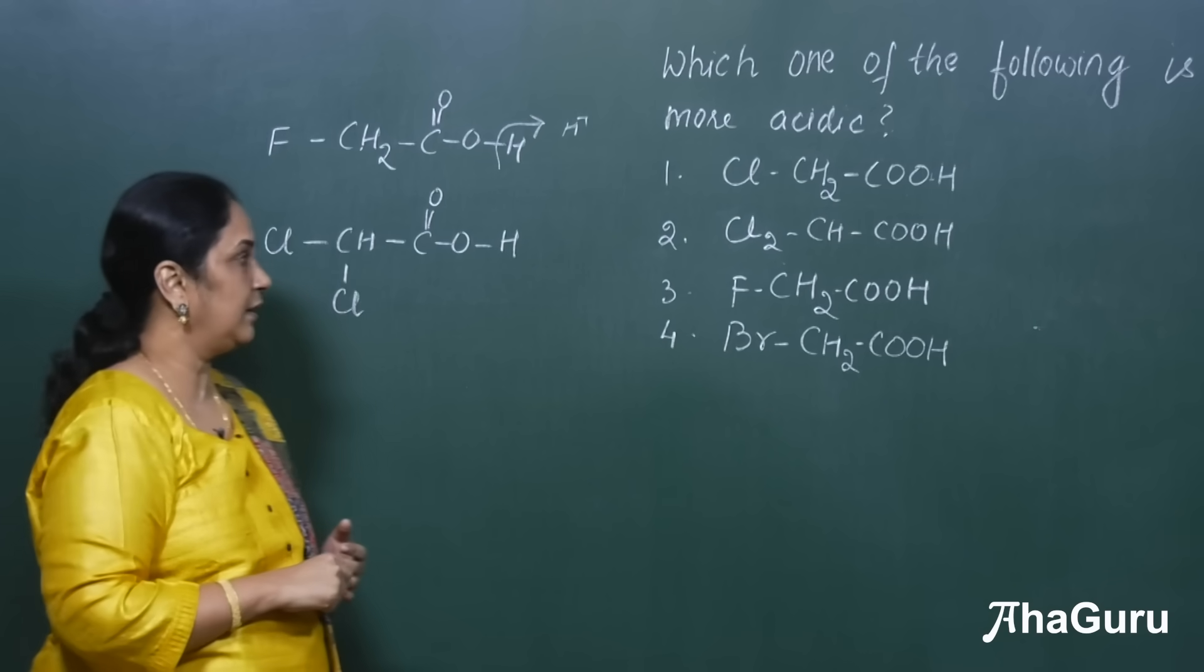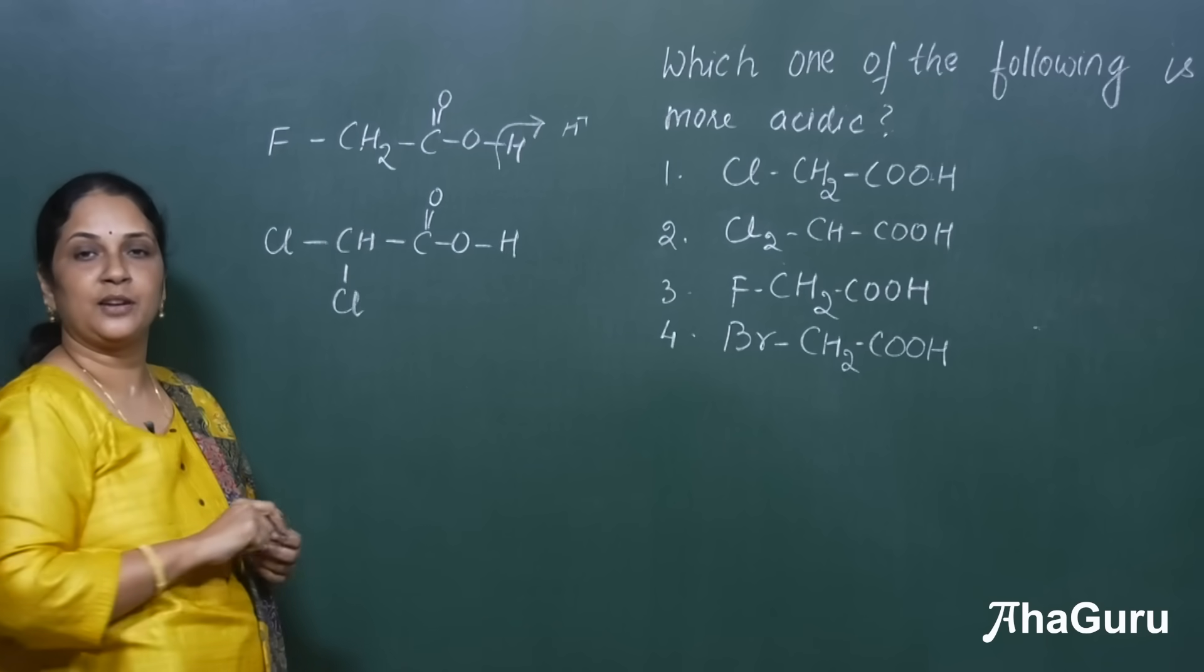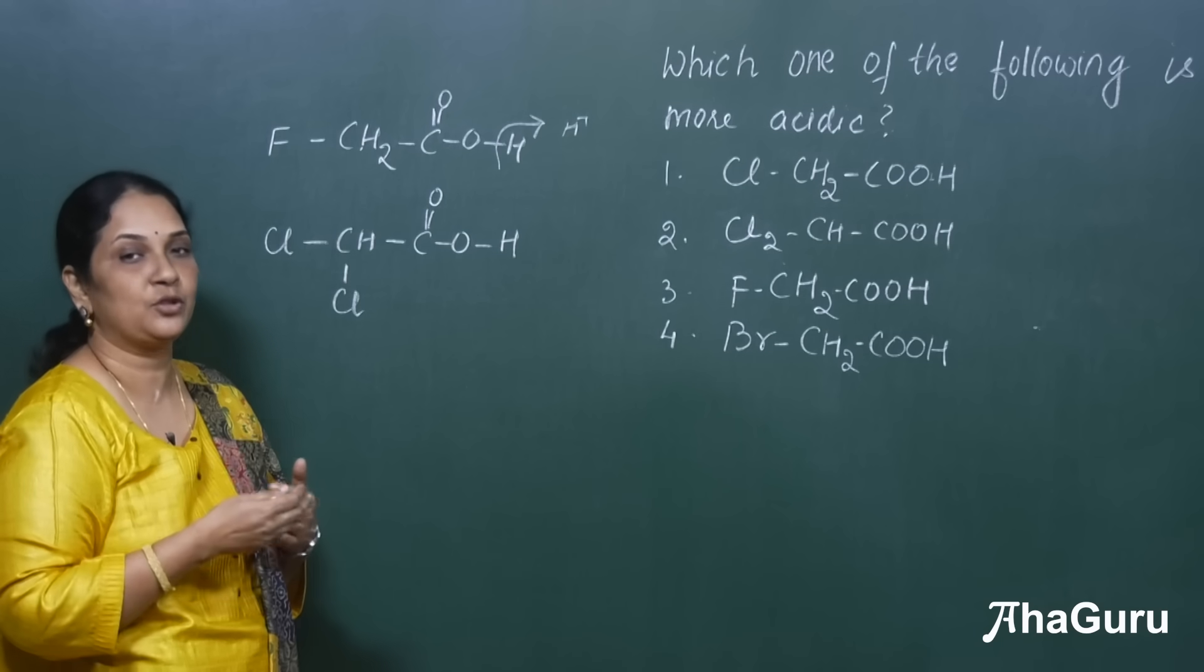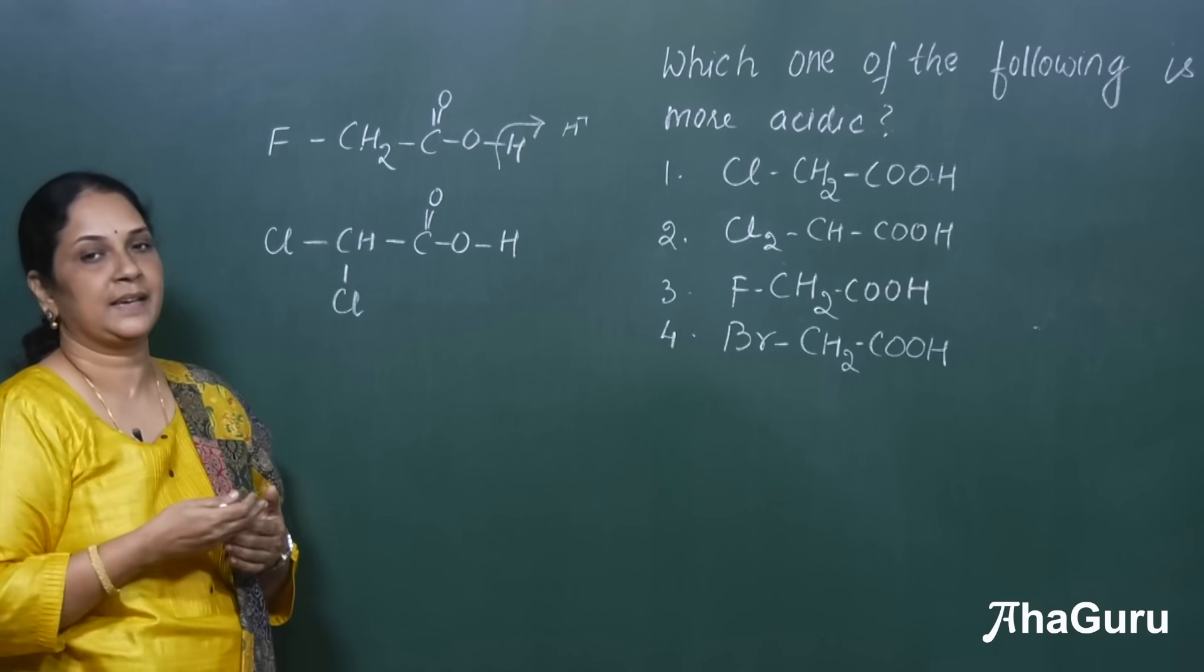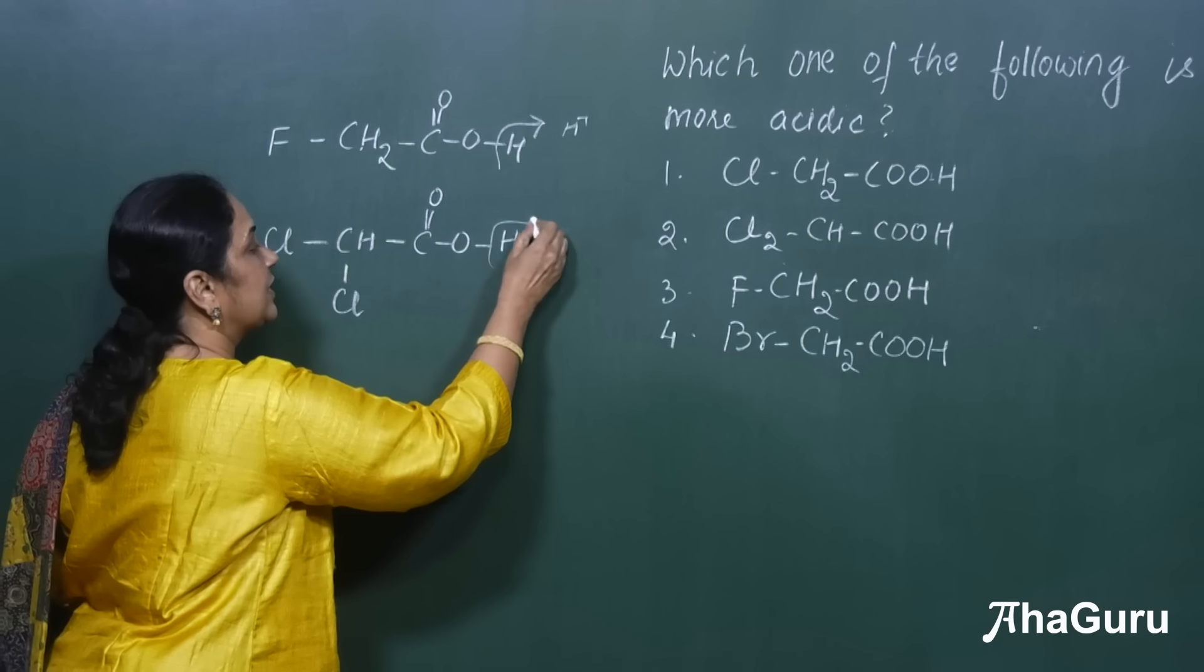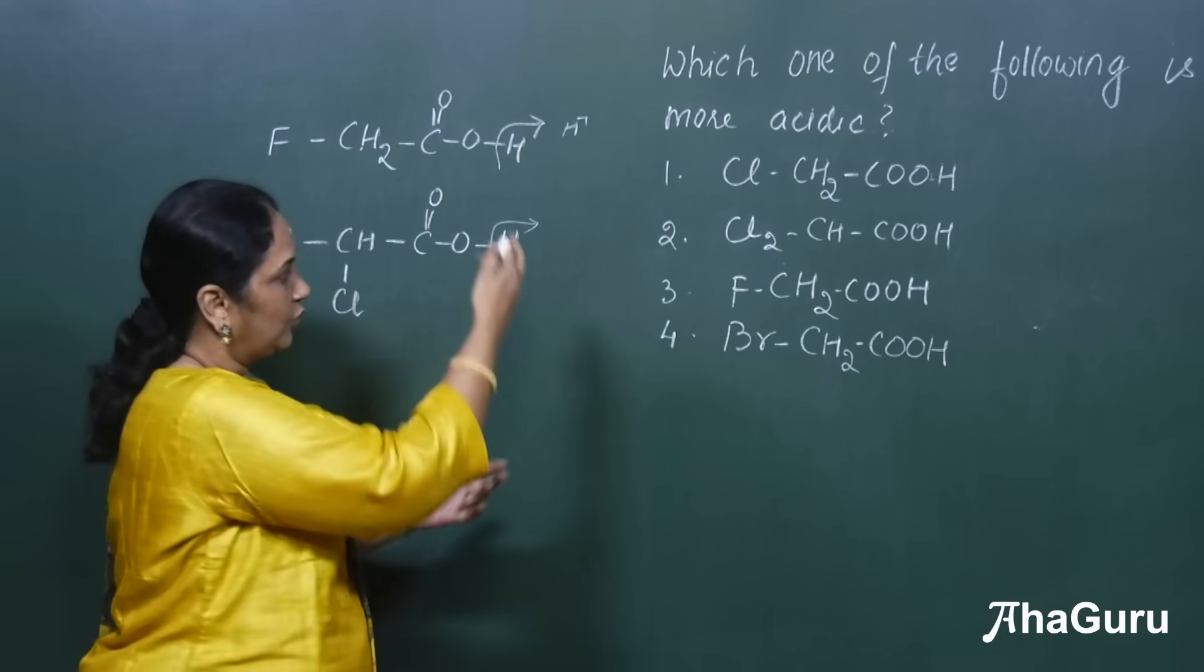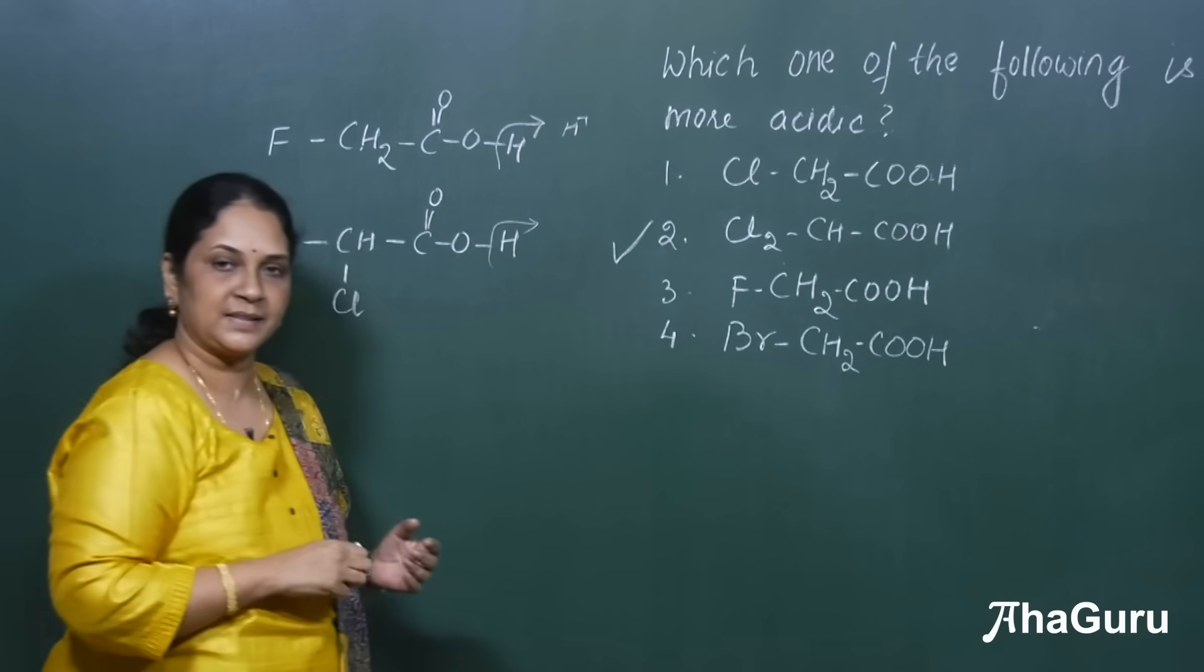But in the second example, here this acid is attached to two minus I groups, that is two electron withdrawing groups. So that can pull more electrons and this hydrogen can be easily released. So when we compare the options, the second option will be the correct answer.